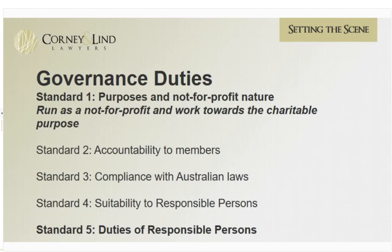There are two governance standards particularly relevant today. The first requires charities to maintain their purposes and not-for-profit nature — they must be not-for-profit and work towards their charitable purposes, and be able to demonstrate this objectively and provide information about their purposes to the public. You'll hear this not-for-profit requirement come up a lot. The second standard requires charities to be accountable to their members, taking reasonable steps to provide members with adequate opportunity to raise concerns about governance.